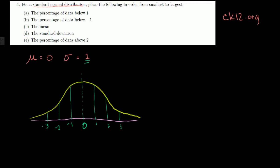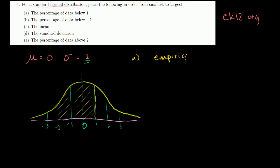So what's the percentage of data below 1? Part A is everything to the left of 1 — it keeps going, everything below 1. This is a situation where we should use the empirical rule — or the better way to remember it is just the 68, 95, 99.7 rule.